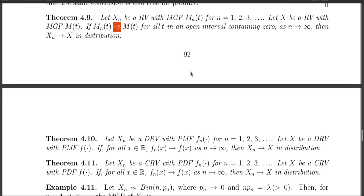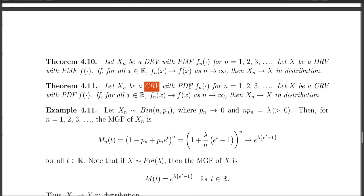The next two theorems: the first one is for the discrete random variable, and the second one is for the continuous case. For the discrete random variable, if fn is the probability mass function of Xn and if the PMF of Xn converges to the PMF of X, then Xn converges to X in distribution.